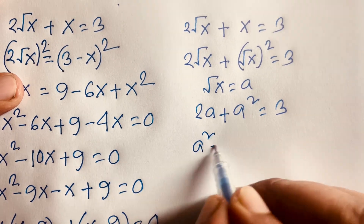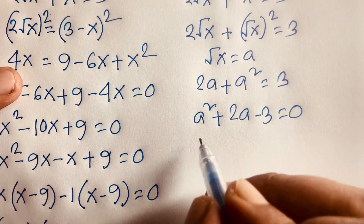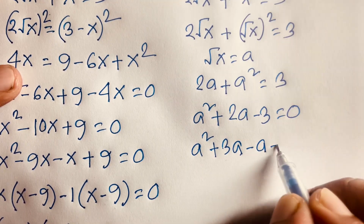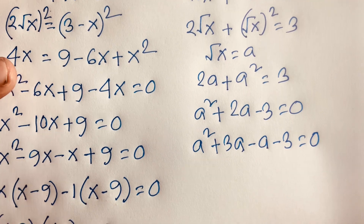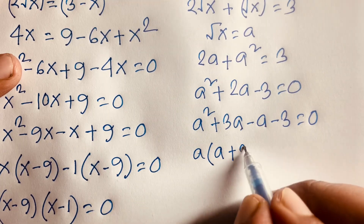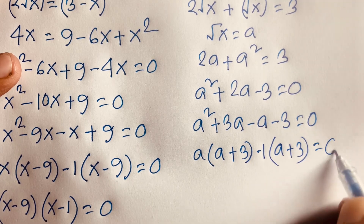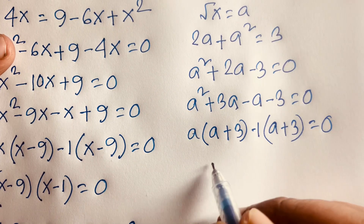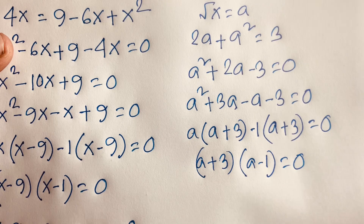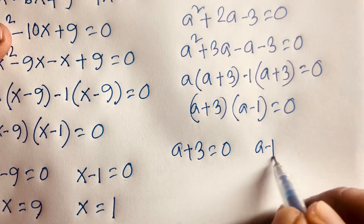This becomes a² + 2a - 3 = 0. Factoring using the middle term split: a² + 3a - a - 3 = 0. Taking a common from the first pair: a(a + 3), and -1 common from the second pair: -1(a + 3). So (a + 3)(a - 1) = 0.